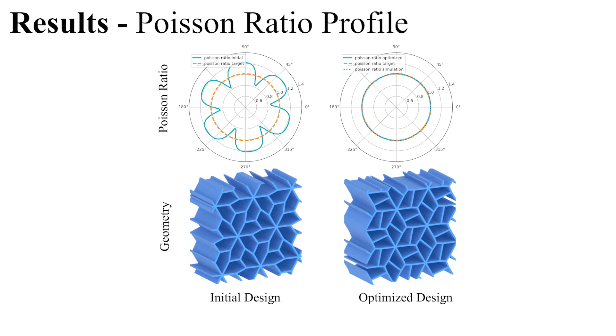Complementing the previous example for stiffness design in the direction of loading, we now turn to lateral coupling in terms of Poisson's ratio. As can be seen in this example, the optimized structure successfully turns a high-frequency profile into an isotropic one.